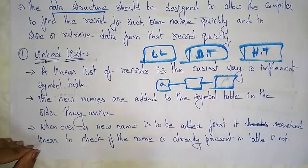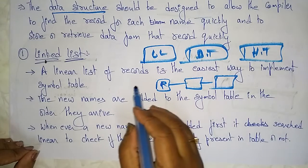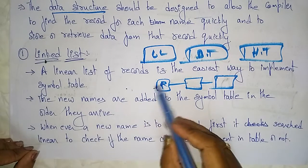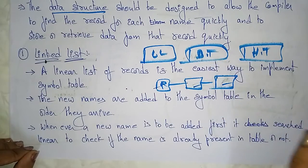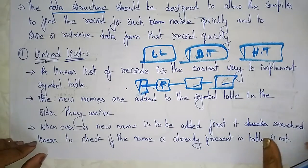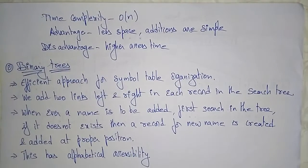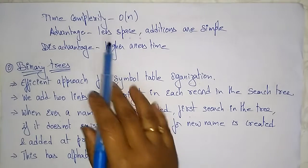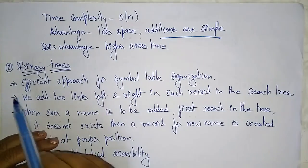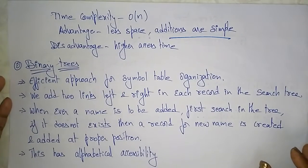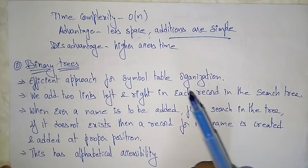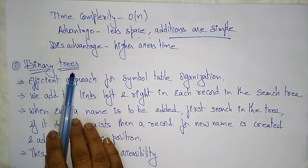For example, if information regarding procedure P is already present in the symbol table and you want to add P again, the compiler first checks whether P is present. If it is present, it continues with the program; if not, it adds another record in the list. The time complexity of this linked list data structure is O(n). The advantages of a linked list are that it occupies less space and adding records is simple. The disadvantage is higher access time — it takes more time to search for a record.